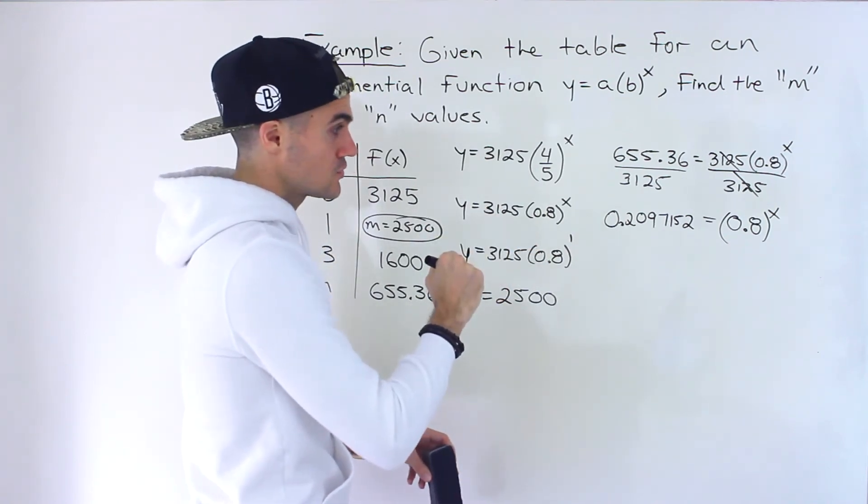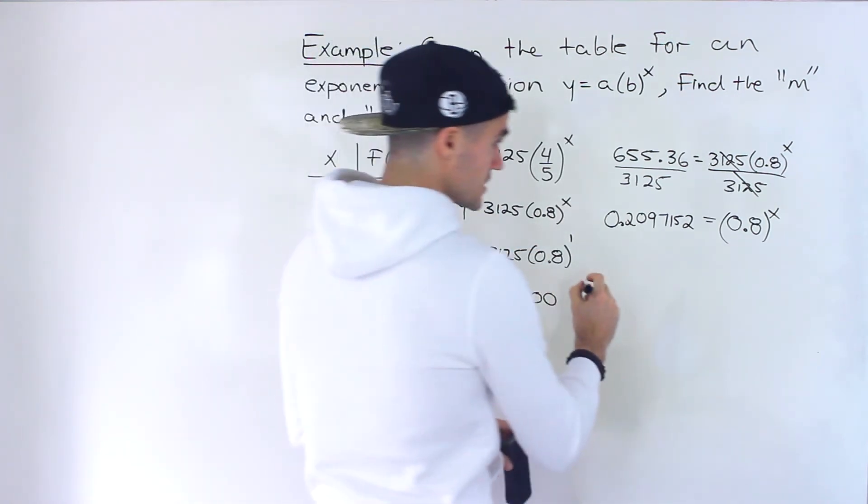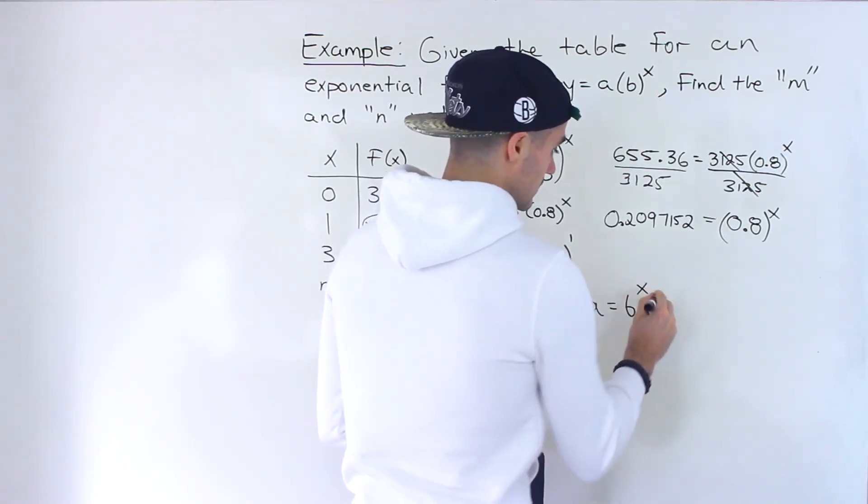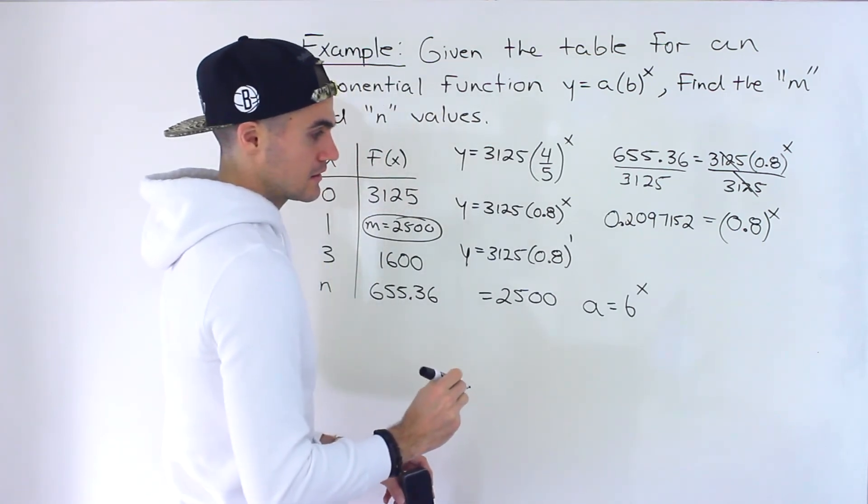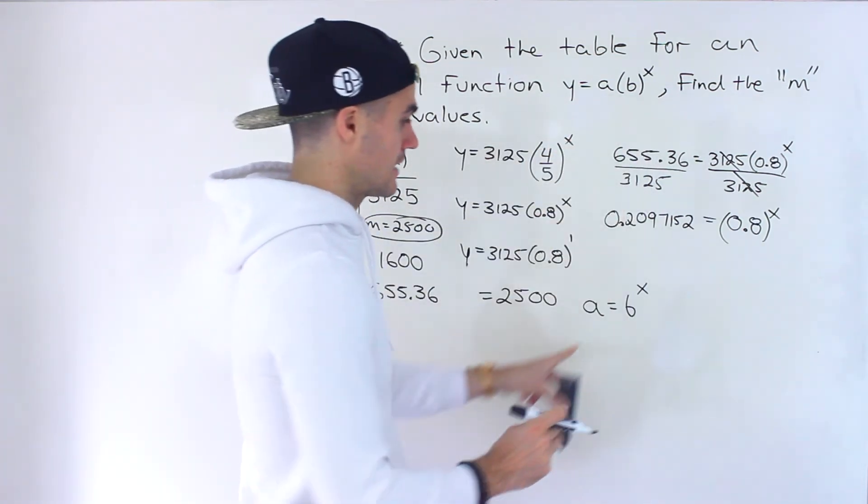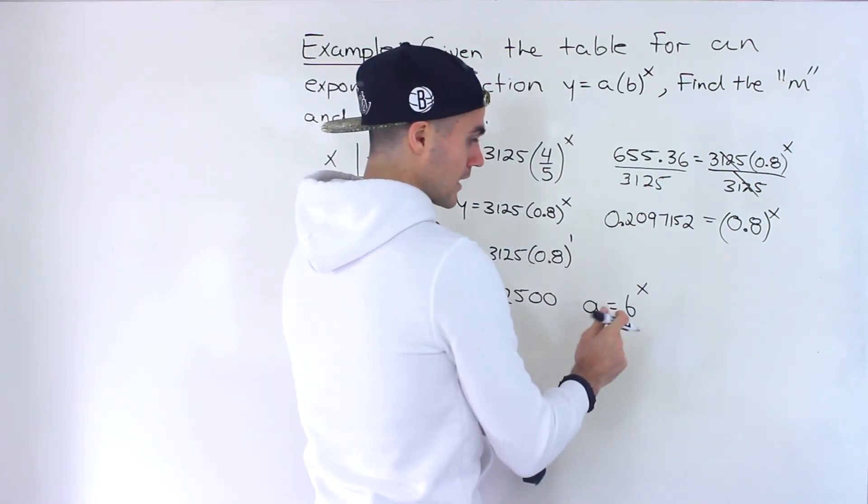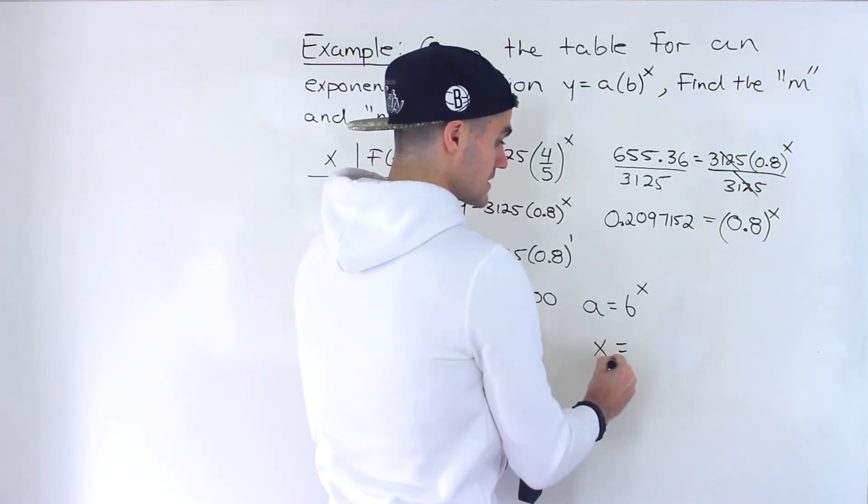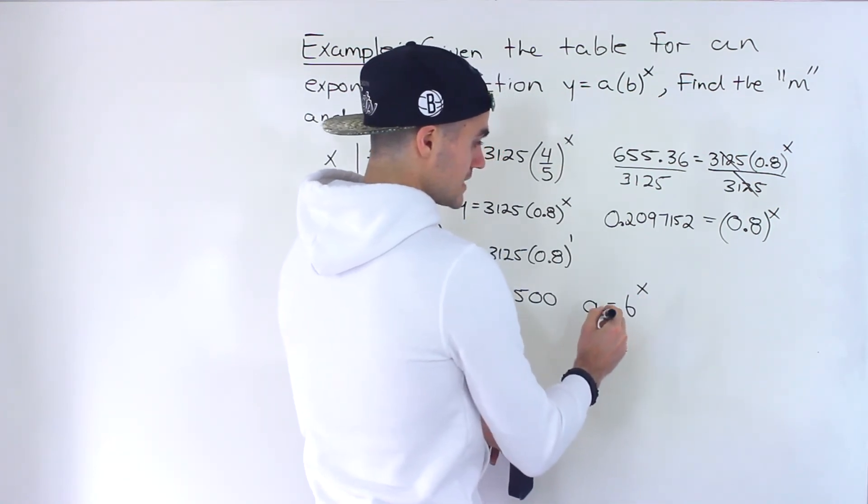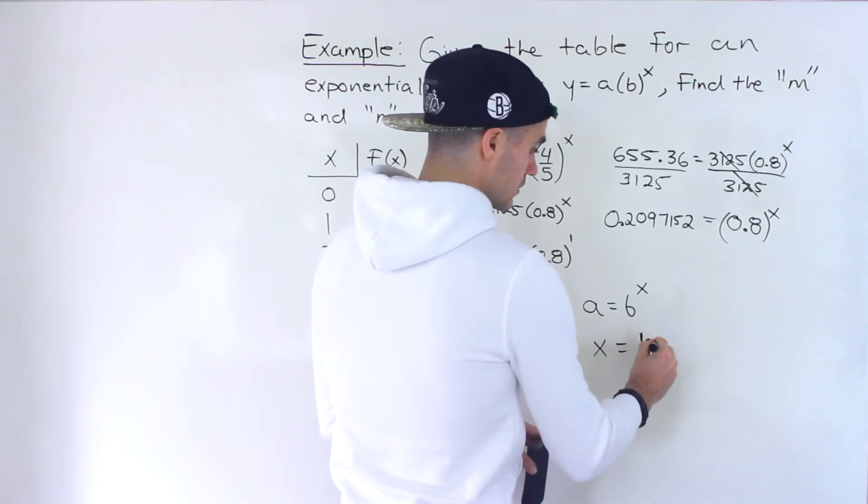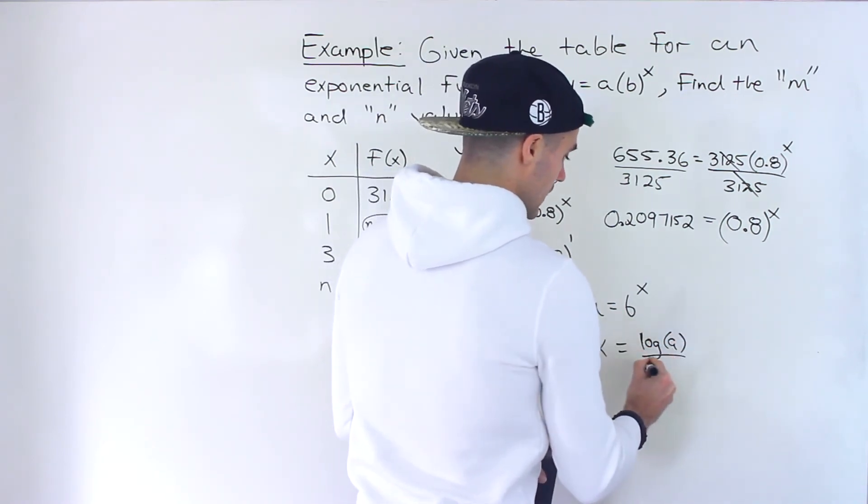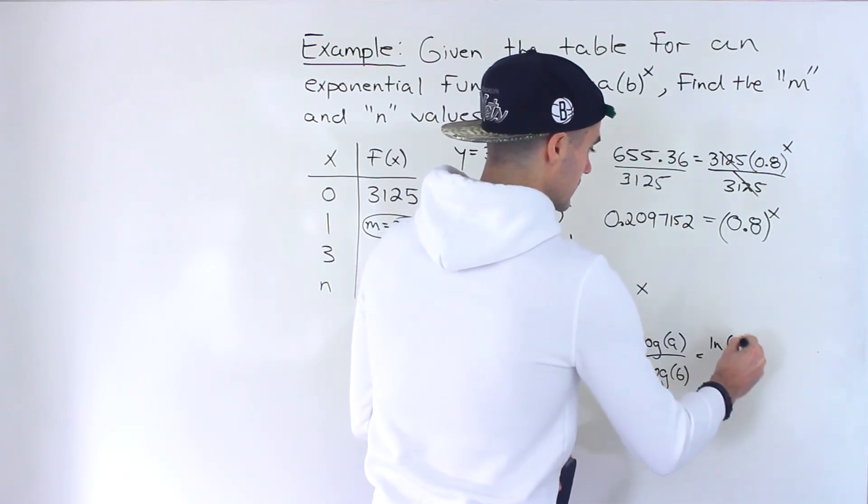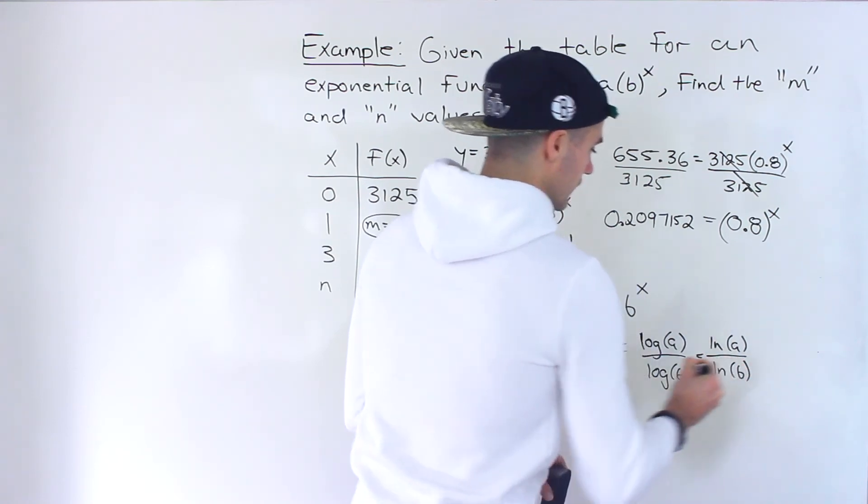Now, if you want to solve for an exponent, you're going to have to use logarithmic rules. So just in general, if you have, let's say, a equals b to the power of x, like that, this a and b is not the same as that. This is just a rule, a general side rule that I'm giving you here. If you want to solve for this x value or isolate for it, you would take log of a divided by log of b. Or you can take ln of a and divide it by ln of b.